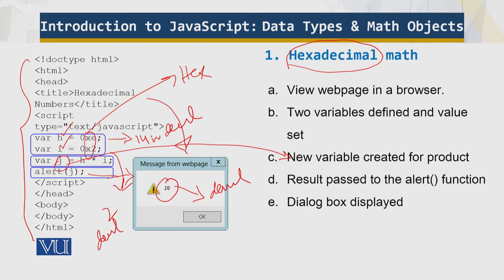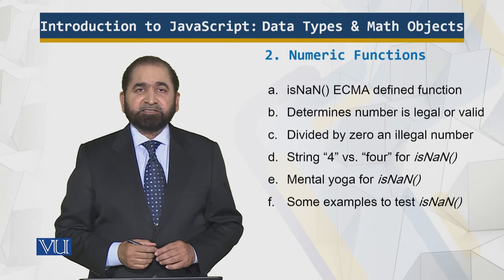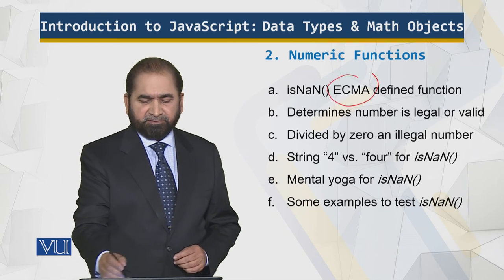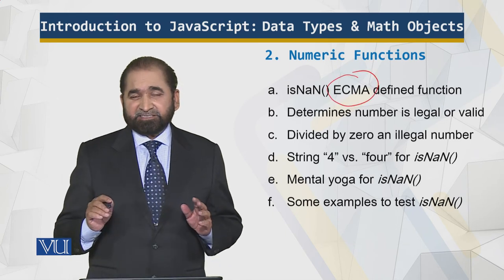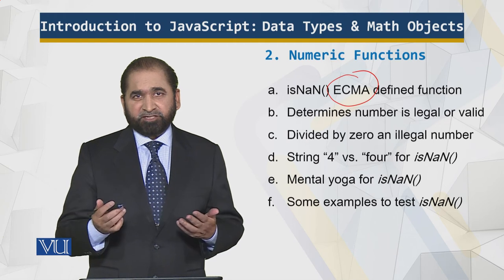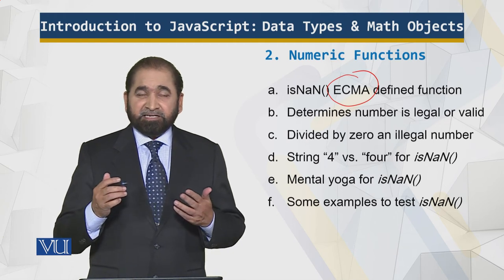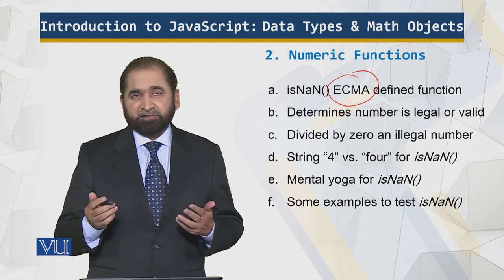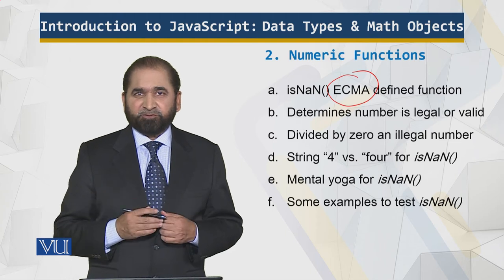Now let's look at something more interesting, which is not a number. So isNaN is the ECMA definition and it checks whether whatever is passed to is not a number. Is that legal? Is that valid? And it generates a true false value.